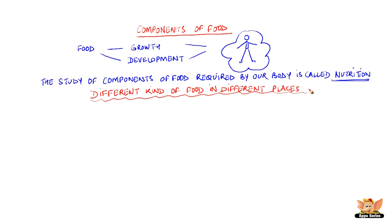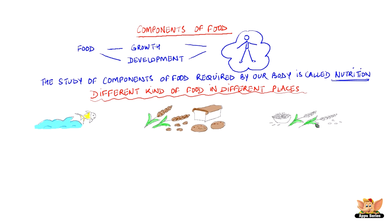For example, people living close to the sea would eat more fish. The places that have better conditions for growing wheat have more people eating breads, rotis and other things that are made from wheat. Similarly, more people would eat rice in areas where they have more fertile ground for the cultivation of rice.